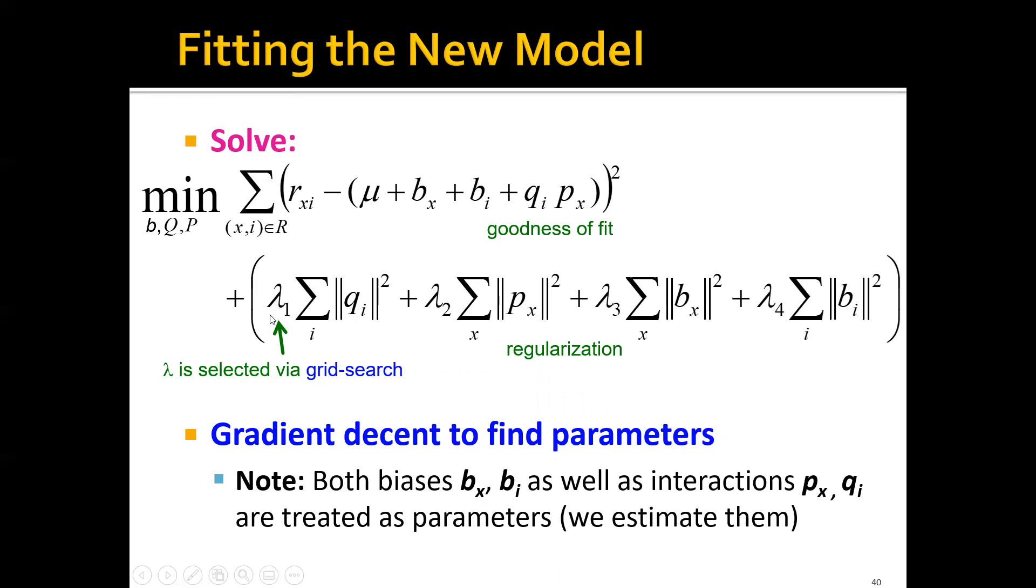These last two terms regularize the bias terms. We have also these lambdas, which are hyperparameters. You can either manually set these hyperparameters, or you can search these lambdas via grid search.